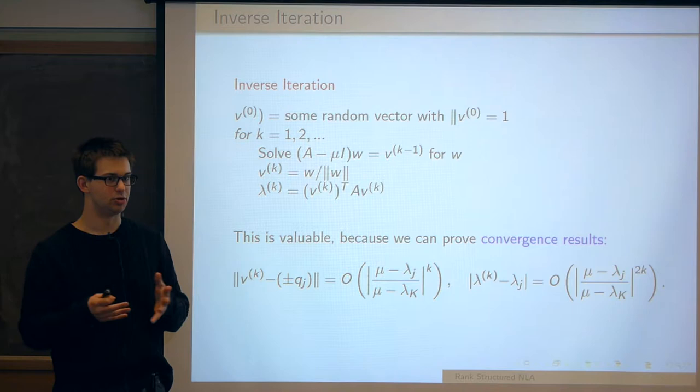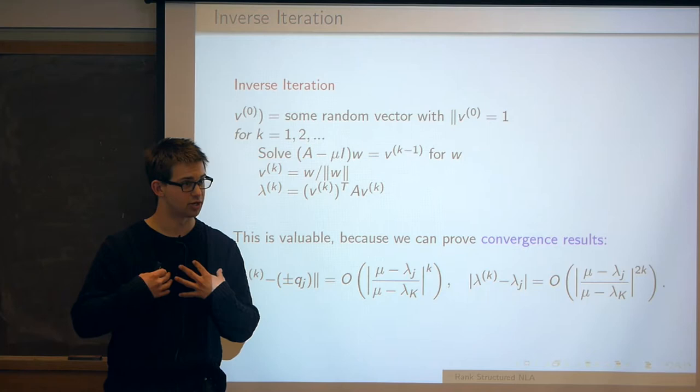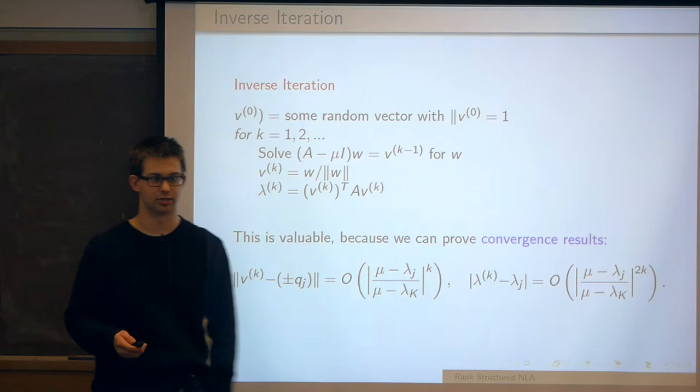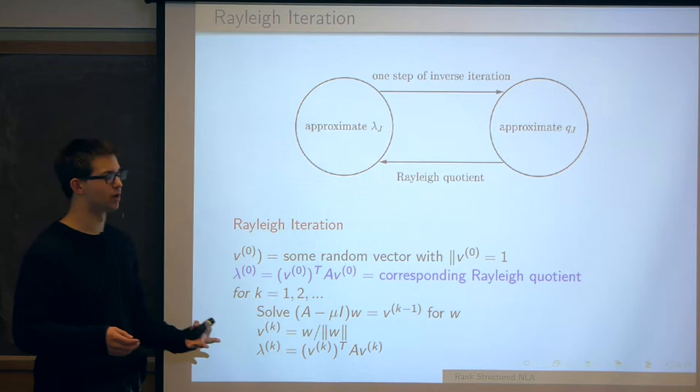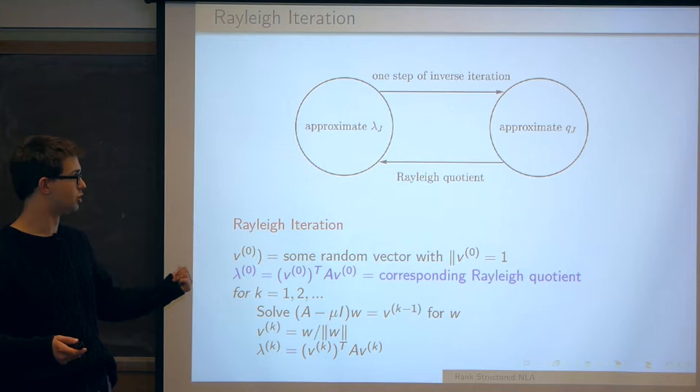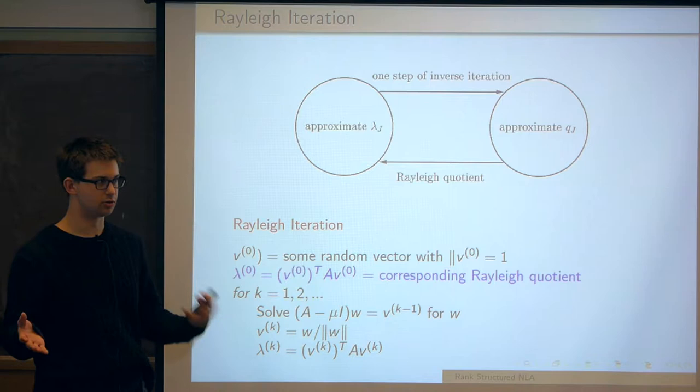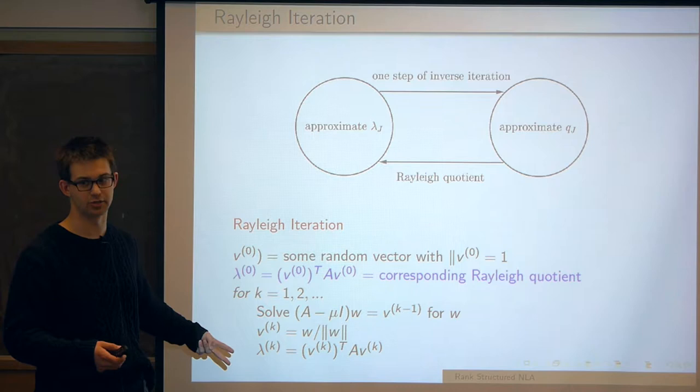This is one of the earliest well-accepted eigenvalue algorithms: Rayleigh iteration, which basically goes back and forth between inverse iteration and computing a Rayleigh quotient. Before Wilkinson's shifted QR came along, this is what most standard linear algebra packages did for a general purpose eigensolver.